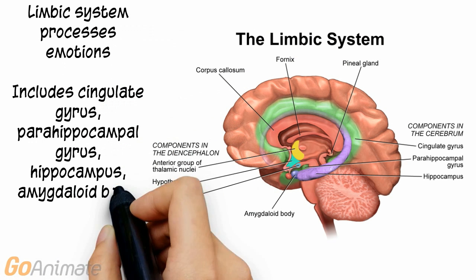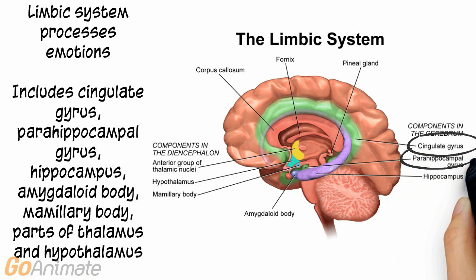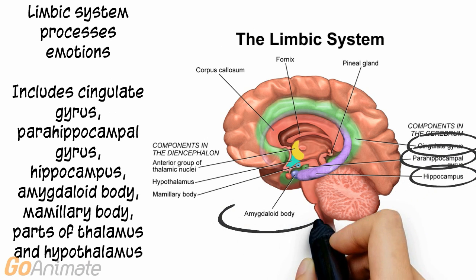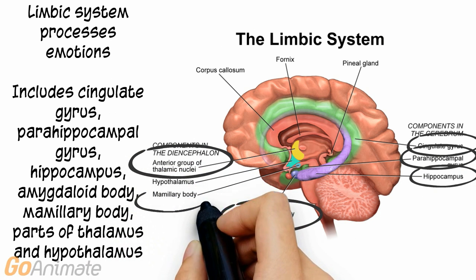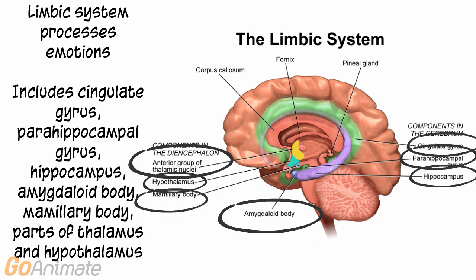The limbic system processes emotions. It includes the cingulate gyrus, parahippocampal gyrus, hippocampus, amygdaloid body, mammillary body, and parts of the thalamus and hypothalamus.